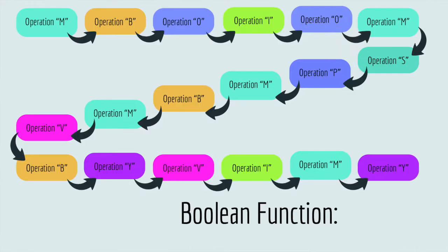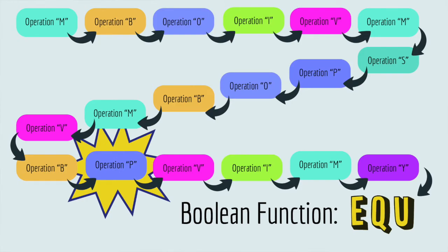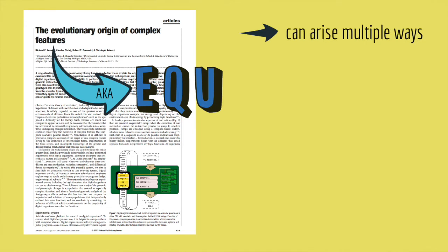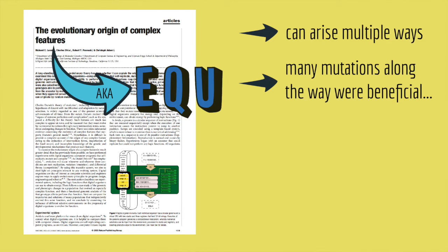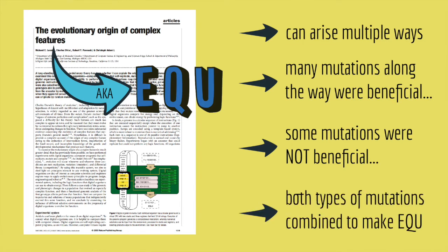Unlike the fossil record, you can actually go back and look step-by-step at which mutations occurred for a particular Boolean function to arise. The most complex Boolean function in AVIDA is equals. When the scientists studied the evolution of equals in AVIDA, they found that equals can arise in multiple ways from different combinations of operations. Many of the mutations along the way were beneficial, but some were not — yet they persisted long enough for another mutation to occur that, in combination with the earlier mutations, gave the AVIDians the ability to do the function equals.